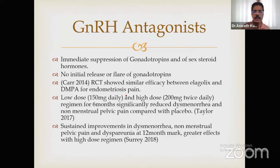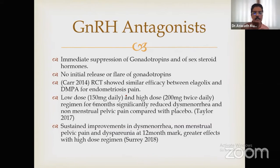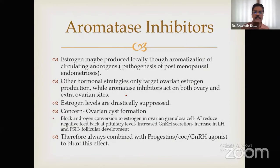GnRH antagonists cause direct suppression of gonadotropins and sex steroids with no initial flare. RCTs show efficiency between elagolix and DMPA is almost the same. Low dose 150 mg and high dose 200 mg twice daily are available. Over six months, it reduces dysmenorrhea and non-menstrual pelvic pain versus placebo, with sustained improvement at 12 months and greater effect with the high-dose regimen, though complications exist.